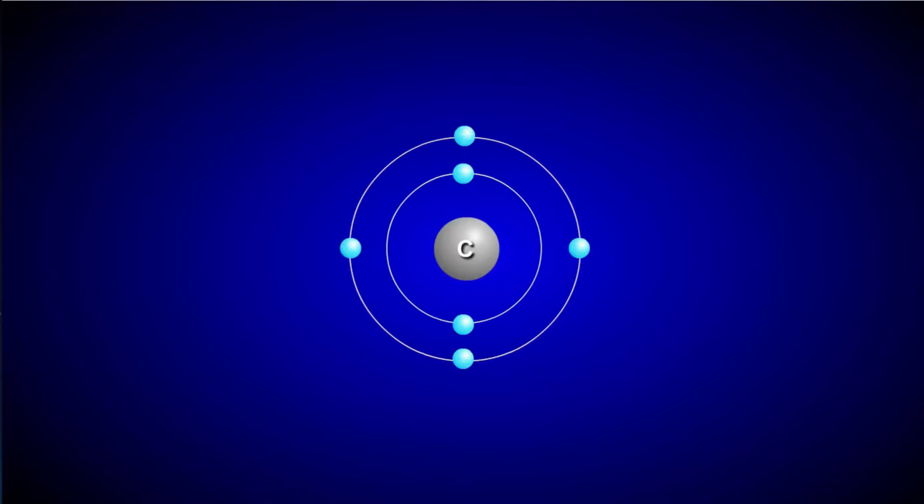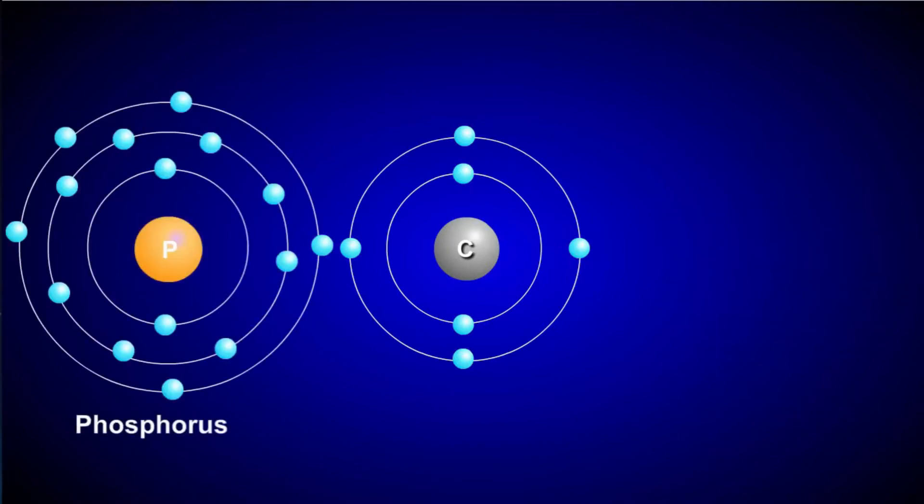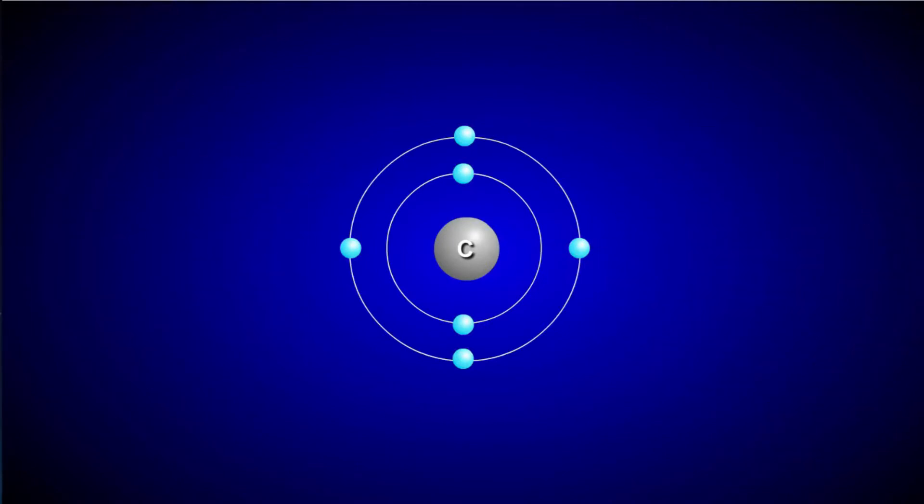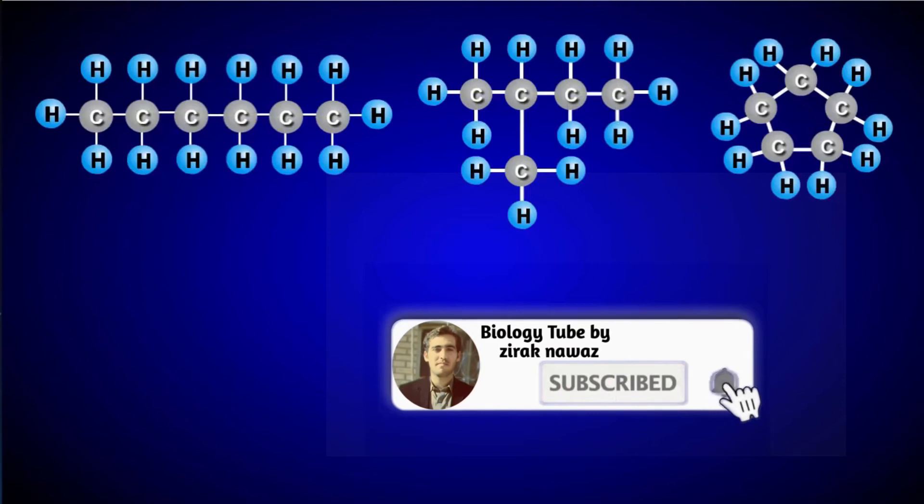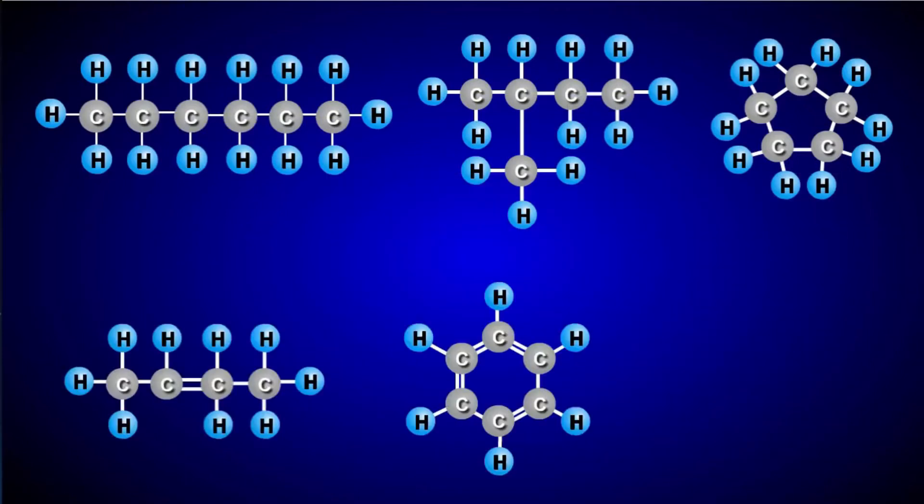In addition to hydrogen, carbon can combine with a number of other atoms including oxygen, nitrogen, phosphorus, and sulfur. Carbon can also bond to itself, forming chains, branch chains, and ring structures.